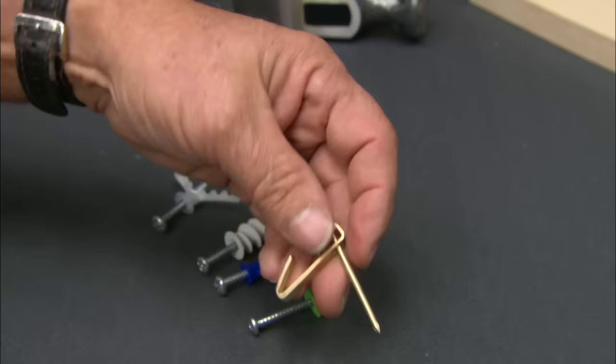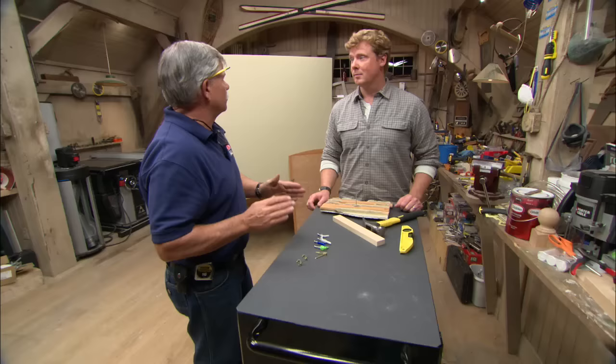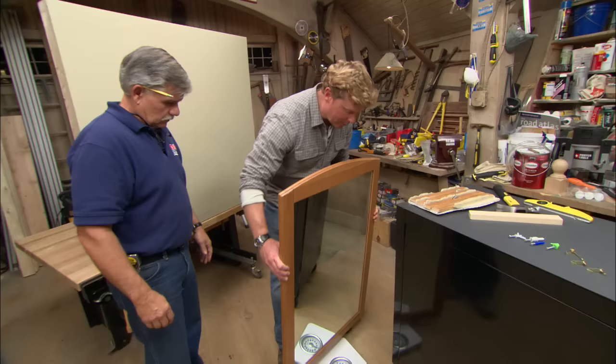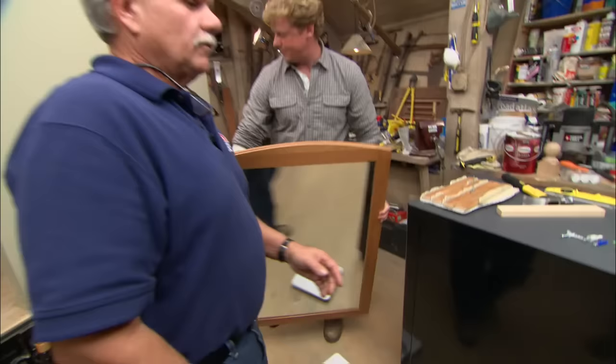And all of these fasteners have a maximum weight rating, which means we need to know the weight of our picture, or in this case our mirror. And we can find that easily using a bathroom scale. It looks like it's about 30 pounds.